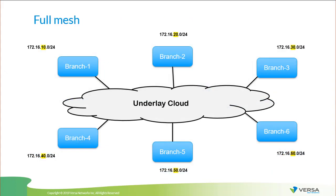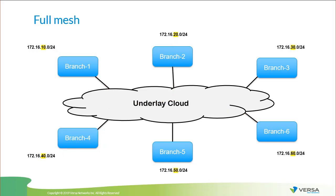Let's begin with the first simple topology. Let's imagine that we have six branches connecting six different sites. I purposely highlighted the subnet for each of them — branch 1 with the address 172.16.10.0/24 and others with 20, 30, 40, and so on. If any of the devices from branch 4 would like to communicate with the devices in branch 1, the overlay tunnel will be built directly between those devices. As well as if branch 4 would like to go to branch 2, the tunnel will be built directly between branch 4 and branch 2 — and the same to branch 6, and the same from the perspective of branch 5. So we have full mesh connectivity in the case of a full mesh network.